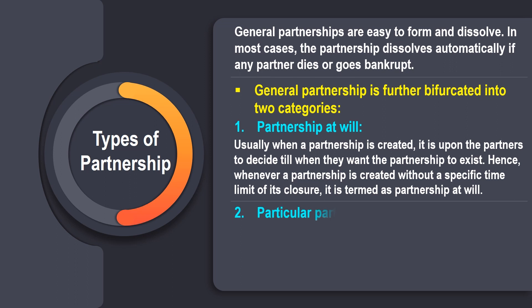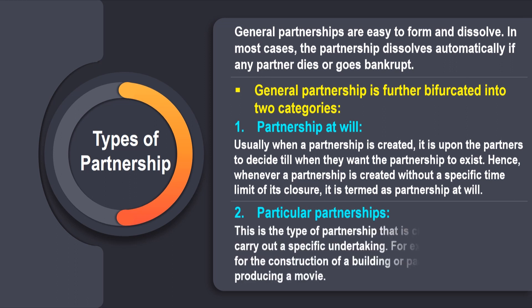The second category is particular partnership. This is the type of partnership created with an aim to carry out a specific undertaking — for example, a partnership for the construction of a building or a partnership for producing a movie.